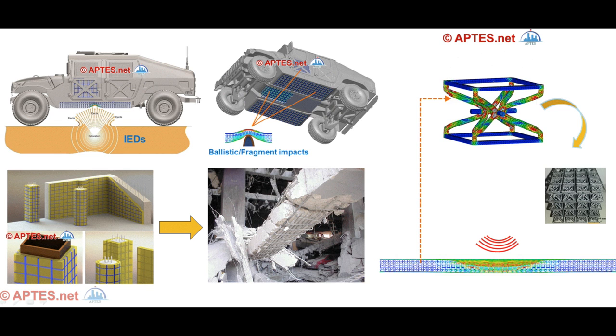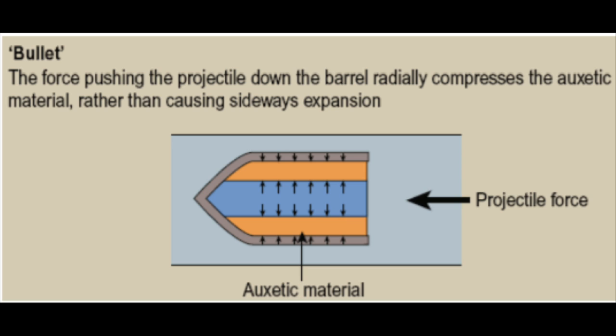Smart textiles made from auxetic fibers can be used to create crash helmets, body armor, and sports clothing with increased dent and fracture resistance as well as increased energy absorption. To oppose these safety applications, a special bullet with an outer core made from auxetic materials is being researched that could increase bullet speed by decreasing lateral expansion of the bullet due to thrust and centripetal forces in the barrel of the gun.